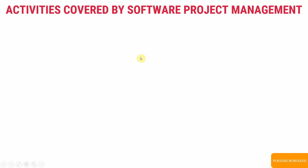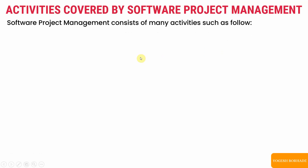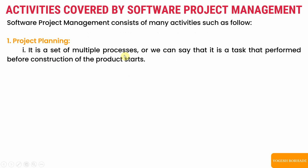There are various activities covered under software project management. The first is project planning. From the name we can understand it is related to the planning of the project, which is done before the actual implementation or development. It is a set of multiple processes — tasks performed before construction of the product starts.